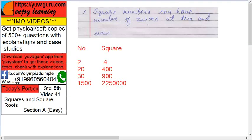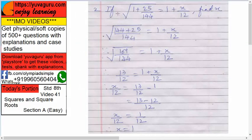Second: if square root of (1 + 25/144) equals to (1 + x)/12, find x. Here this whole is under the square root. So how will you solve this?